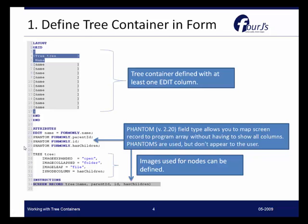Phantom fields can be used outside of tree containers as well. They are a new field type that can be very useful, especially for mapping screen records to program records. The tree also has attributes such as image expanded and image collapsed, so you can customize the image shown when a node is expanded or collapsed, and also for individual leaf nodes. The is node column equals has children attribute indicates that we'll be working with the has children value to dynamically load the array and identify whether a particular node in the tree has children or not.